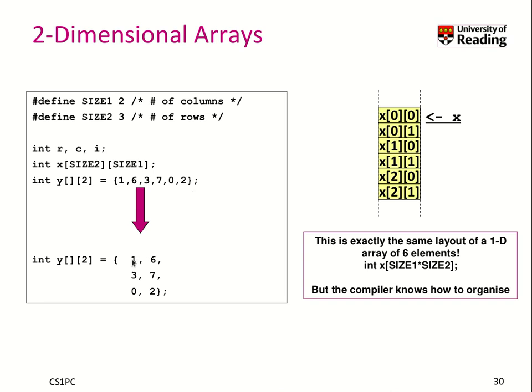It basically rearranges them as follows: 1, 6, 3, 7, 2, and 0 into this 2D structure. And it's basically the same layout as if you would use a one-dimensional array of six elements.